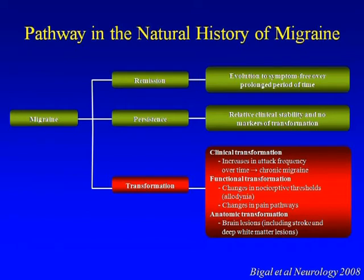Dr. Bigal suggested three terms: clinical transformation, functional transformation, and anatomical transformation. Clinical refers to increased attack frequency over time. Functional refers to changes in nociceptive thresholds — allodynia and changes in pain pathways. Anatomical refers to white matter lesions sometimes seen in migraineurs; nobody knows the pathological mechanism, but they correlate with increased frequency.